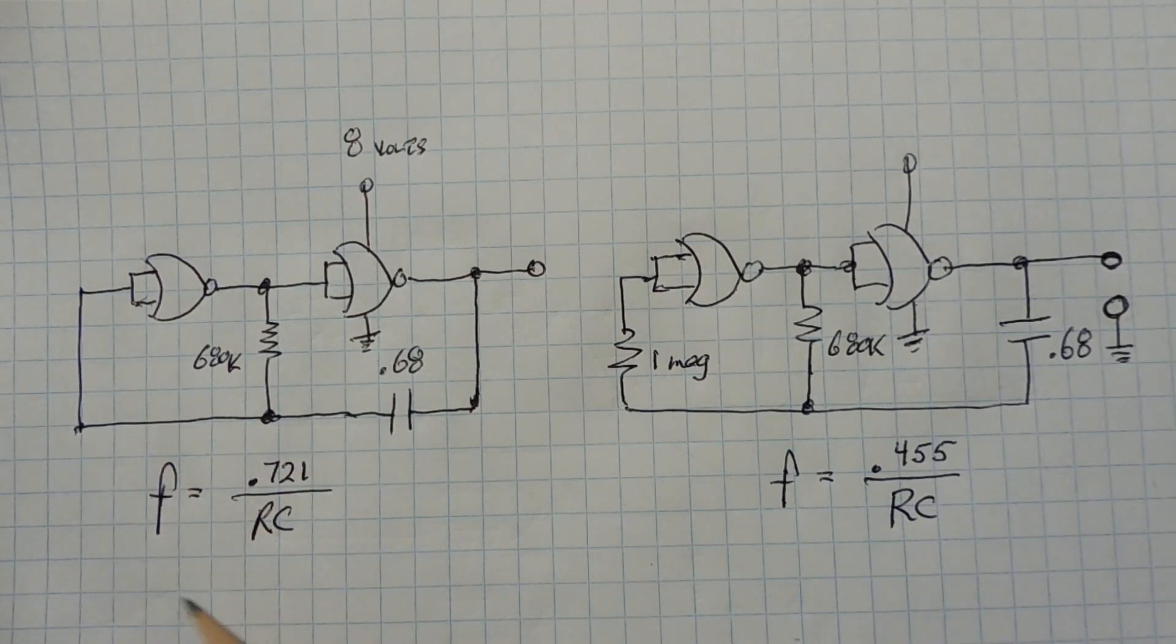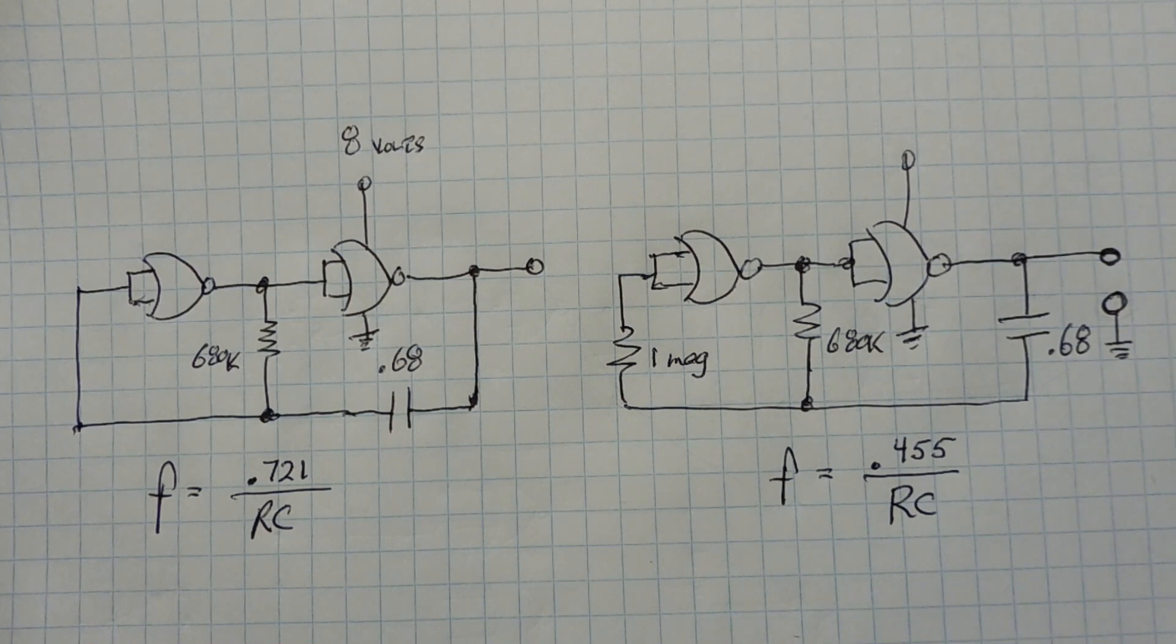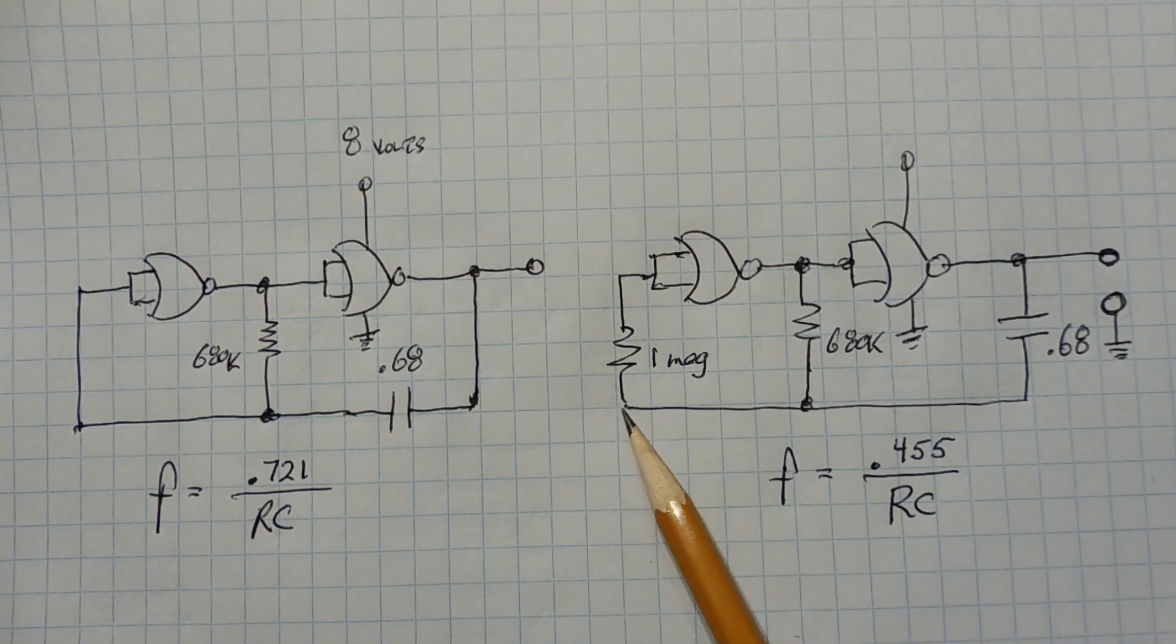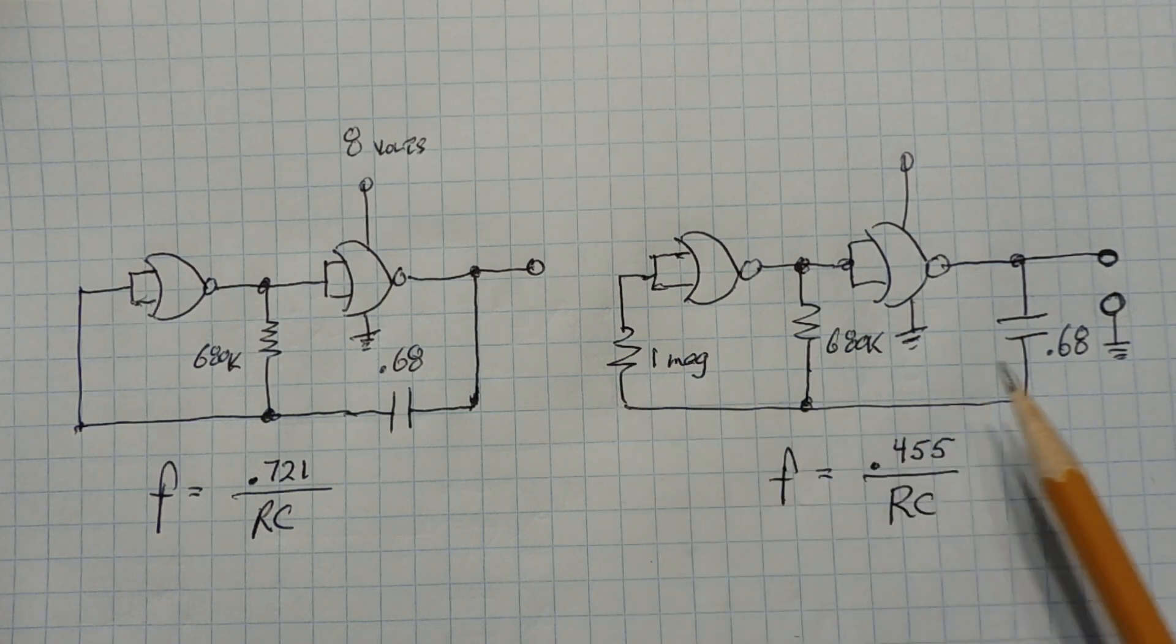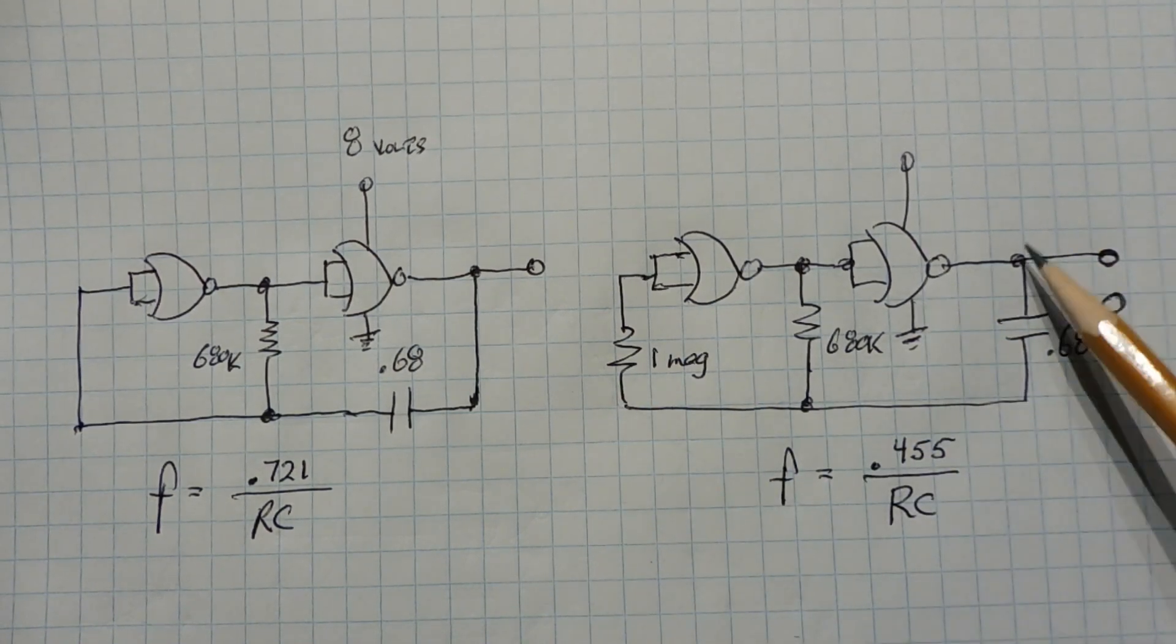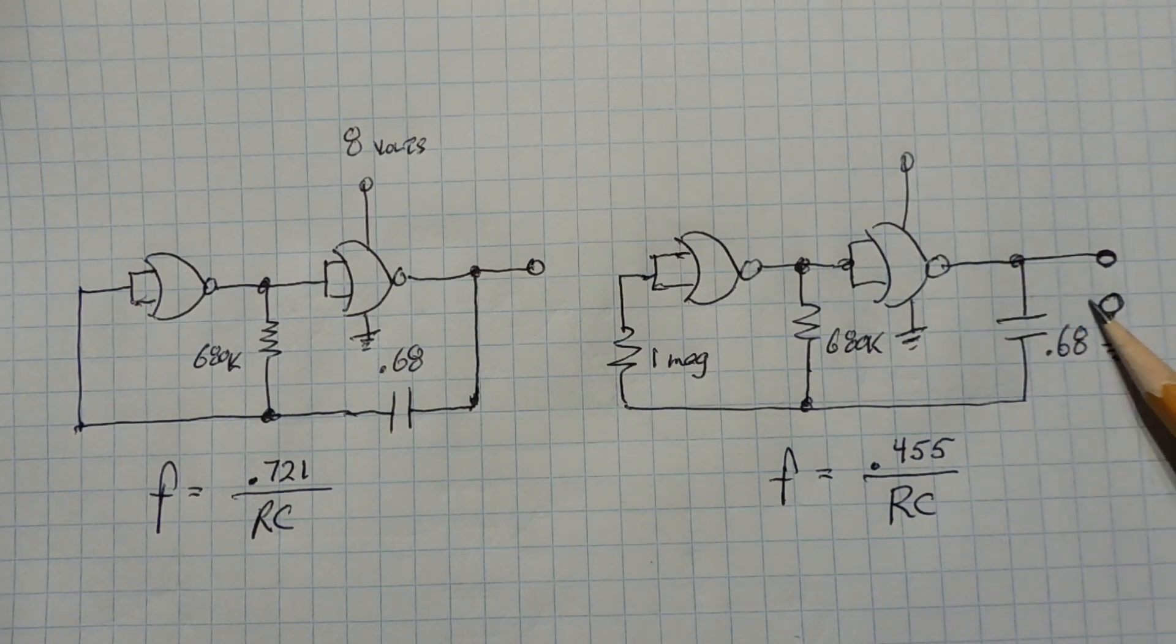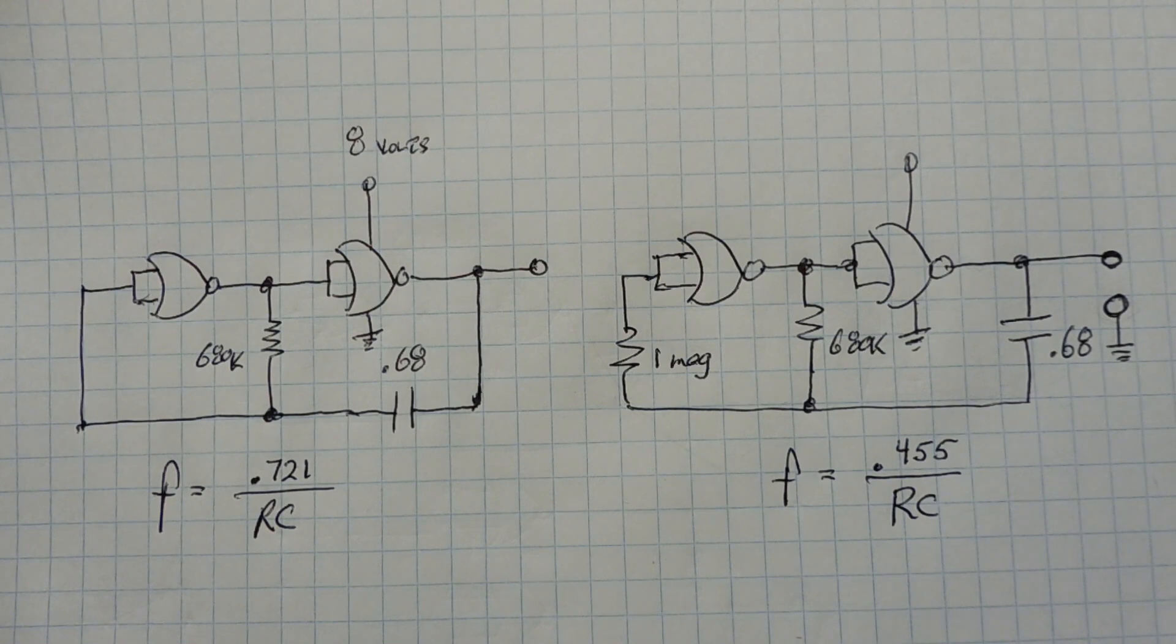A lot of students make a mistake: they think this bus here is a ground bus, but it's actually a tie point for these three components. The ground is actually pin 7 of the chip. So the output is taken from the output of this gate and ground, which is pin 7 of the chip. Now this oscillator is only good for low frequency applications, because when you get into the higher frequencies, this capacitor becomes very small and startup becomes unreliable.